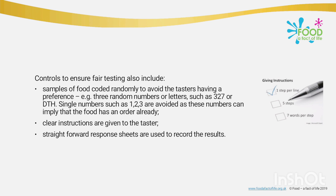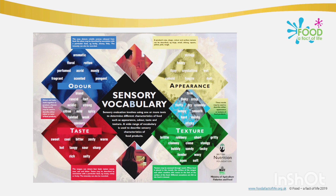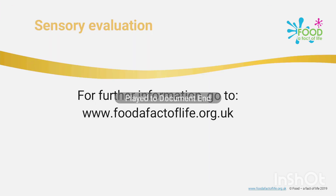A small number of samples are presented at one time so taste buds do not get tired. Food samples are coded randomly to avoid testers having a preference — for example, using three random numbers or letters such as '327' or 'DTH'. Single numbers like one, two, three are avoided as they can imply an order. Clear instructions are given to testers, and straightforward response sheets are used to record results. These form the overall framework for sensory evaluation, also called sensory vocabulary.